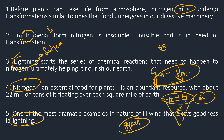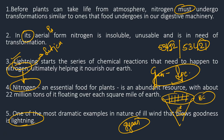Sentence 3: 'Lightning starts a series of chemical reactions that need to happen to nitrogen, ultimately helping get it nourished.' So nitrogen is introduced in sentence 3. Which sentence talks about nitrogen? Number 4. So we put number 4 after that. Now we have five, three, and four blocked together. The problem is with number 1 and number 2 — which one comes first? It can be five, three, four, one, two — or five, three, four, two, one.